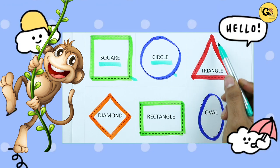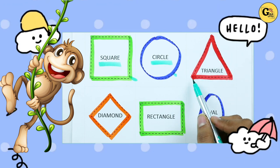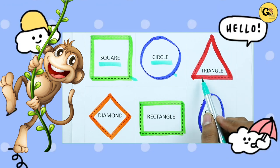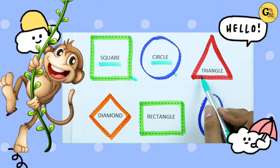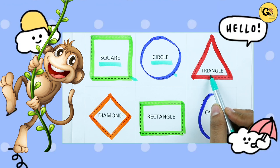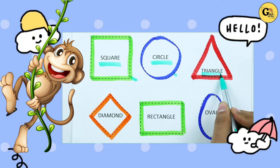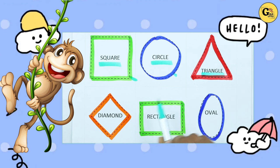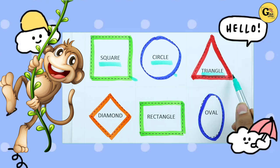Which shape is this? Triangle. T-R-I-A-N-G-L-E. It's a triangle with red color.